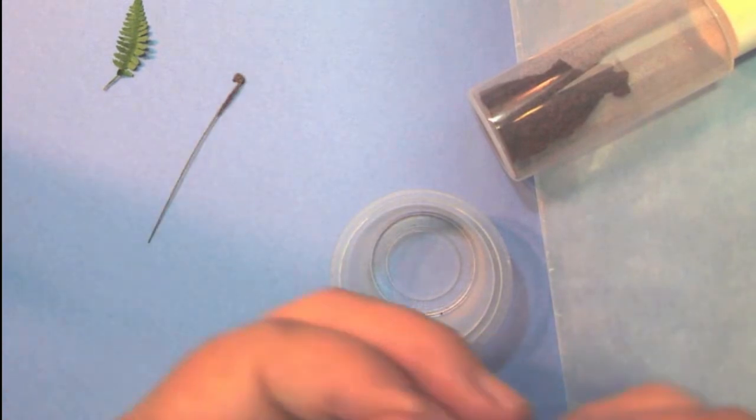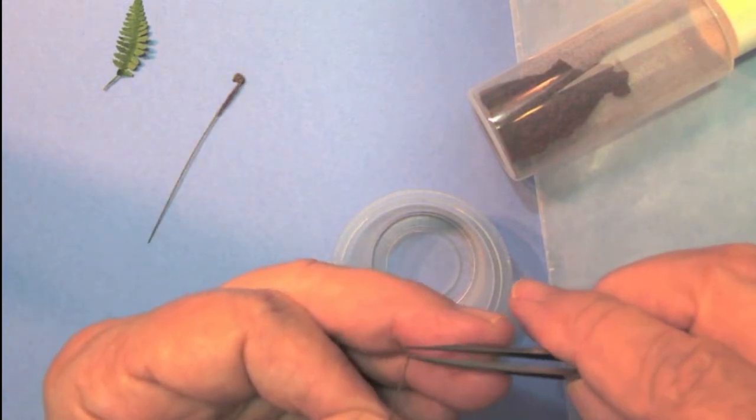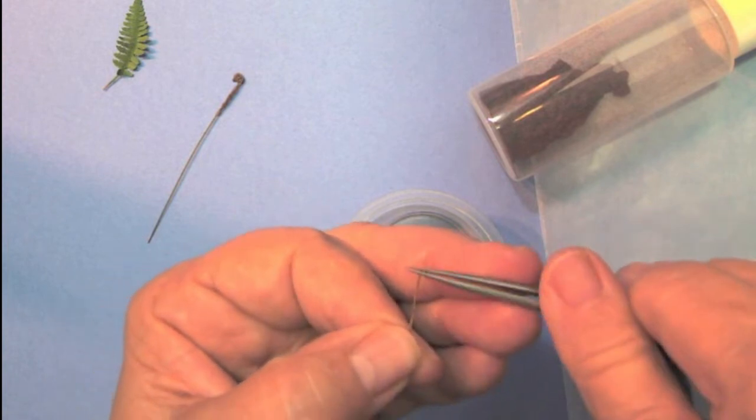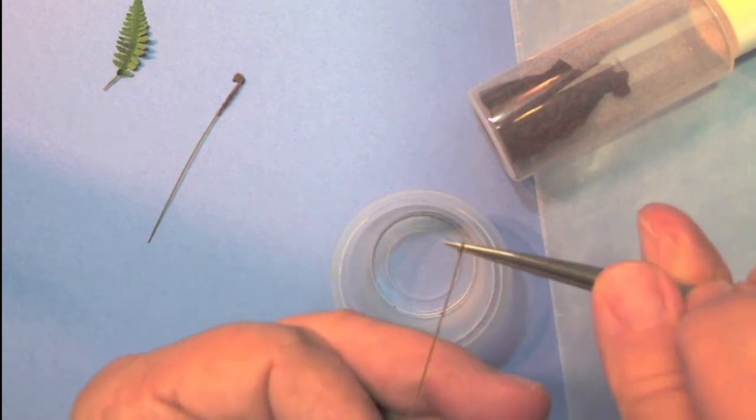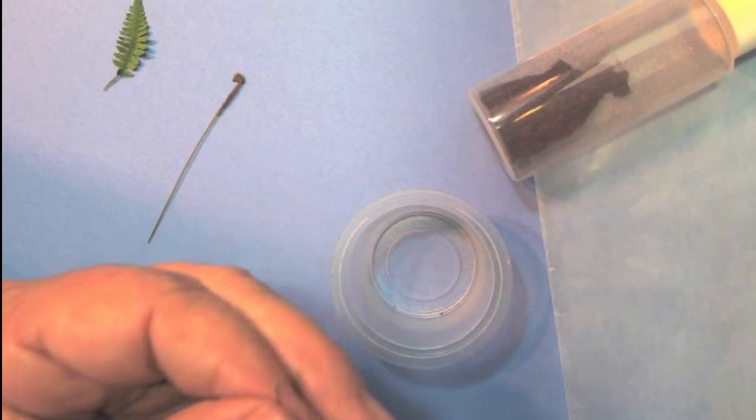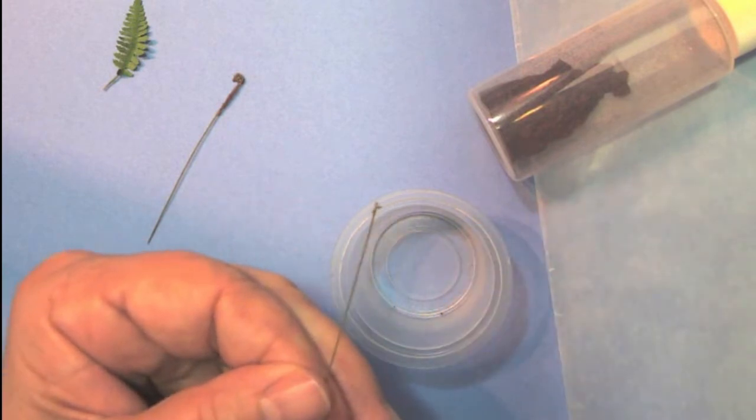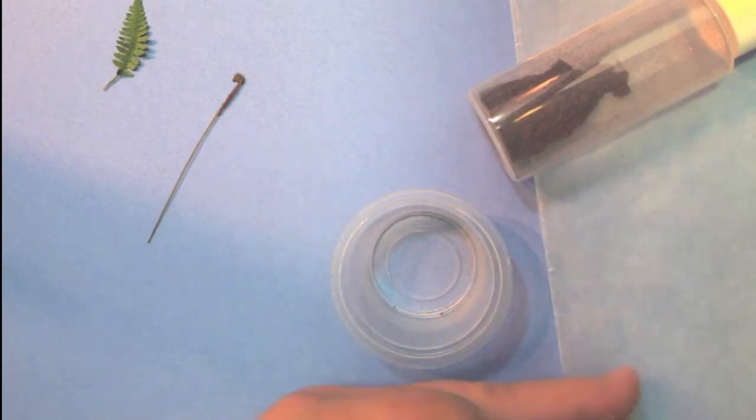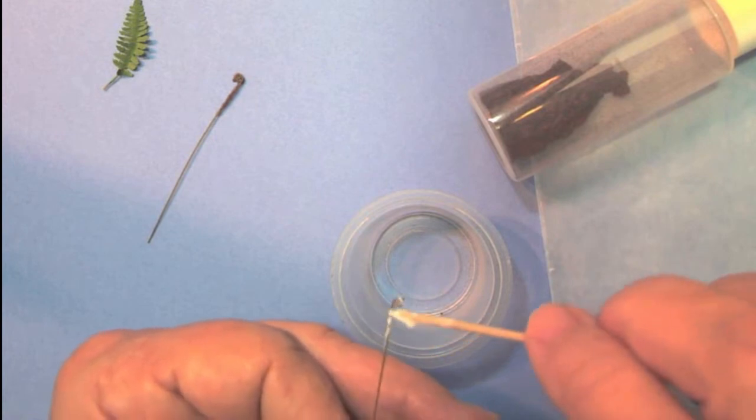all you do is curl the 30 gauge wire, put some white glue on it, and then the flock.